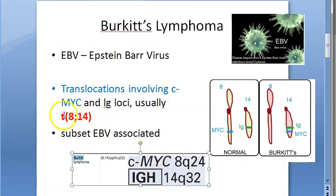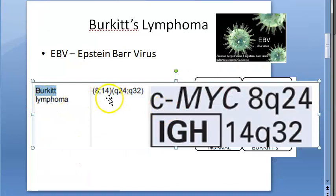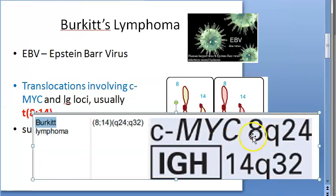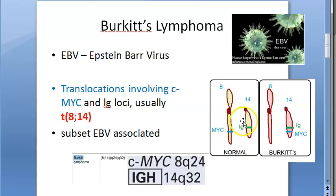This translocation can happen because of Epstein-Barr virus. In Burkitt's lymphoma: t(8;14), CMYC on chromosome 8, IgH on chromosome 14. Both are on the Q arms of the chromosome — they are jumping from one place to the other, translocated. The Q arm is the longer arm of the chromosome, as opposed to the P arm which is the shorter arm.